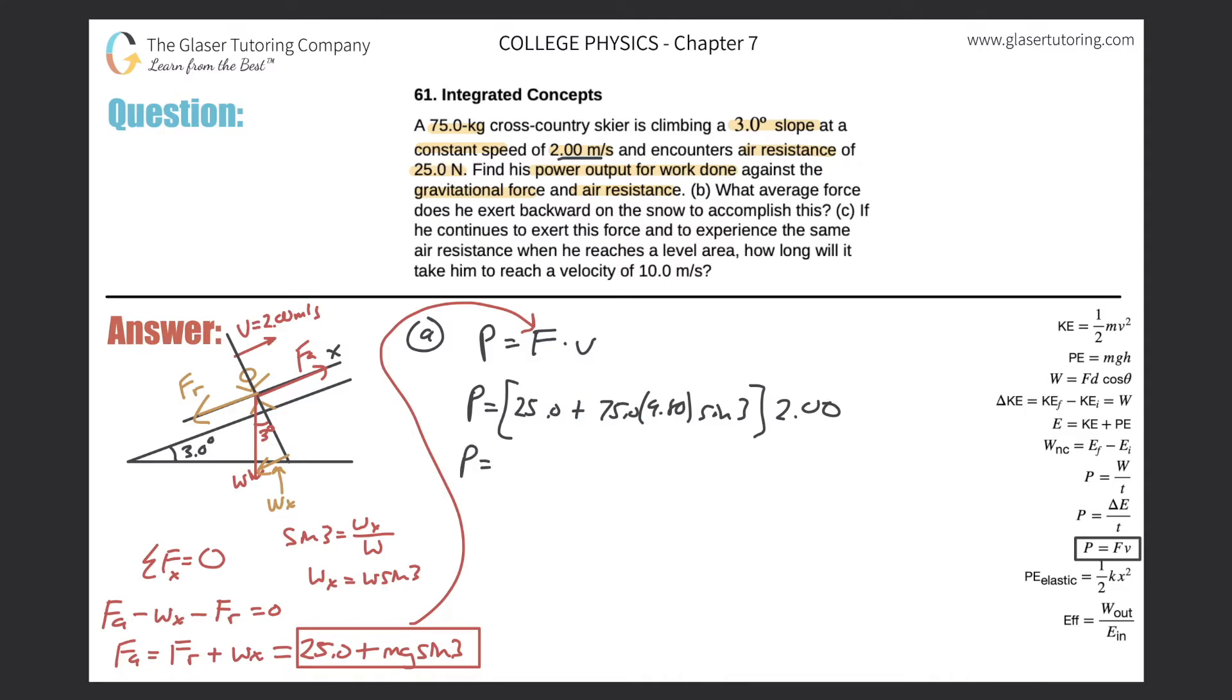And that's all we need to do now. So let's just throw it into the calculator. So we have 25, parenthesis, 25 plus 75 times 9.8 times the sine of three. And then that whole thing multiplied by two. So it looks like it comes out to be about 127. So 127. And that is in terms of watts. Alright, so that's the power. That is letter A.